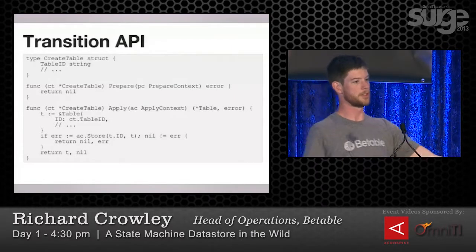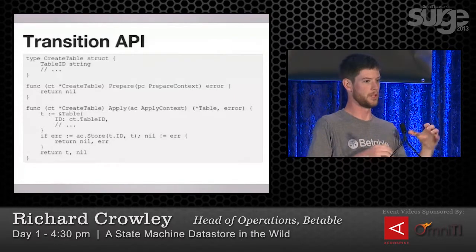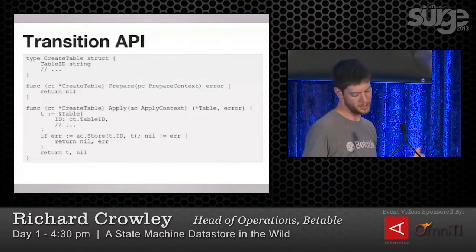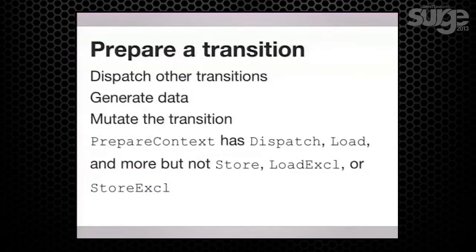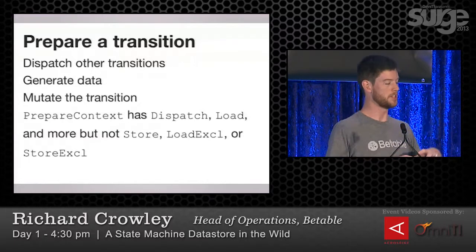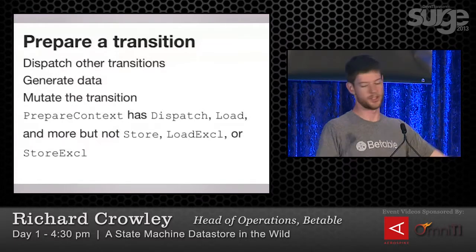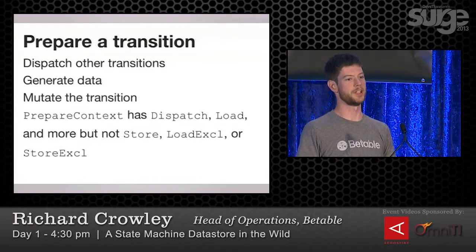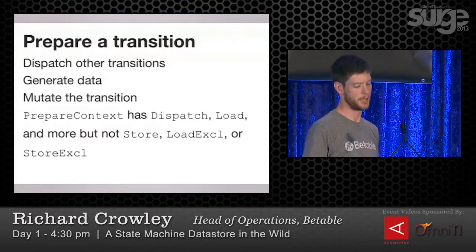The transition has two methods: prepare and apply. The prepare method can do a lot of stuff. It can dispatch other transitions into the system, generate data like building identifiers, mutate the transition — maybe it generates an identifier and puts it in the transition — and it can load entities. It can do a lot of stuff, but it cannot store data. You can't mutate anything in the prepare step.